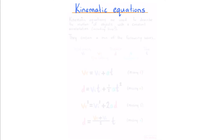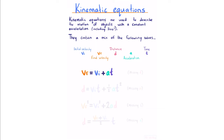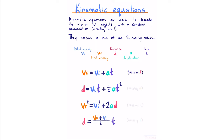Kinematic equations are used to describe the motion of objects with a constant acceleration, including zero. They contain a mix of the following values: vᵢ for initial velocity, vf for final velocity, d for distance, a for acceleration, and t for time. Here are our four kinematic equations. Importantly, each is missing one of these values — you can use this to help narrow down which equation to use.